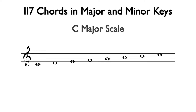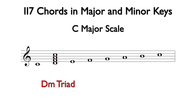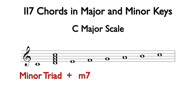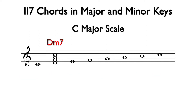Here is a C major scale. The two chord is based off of D. Using the notes from the scale to build the seventh chord, we can add F, A, and C above the D note. The bottom three notes spell a D minor triad, and the interval from D to C is a minor seventh. A minor triad plus a minor seventh interval above the root is a minor seventh chord. This is D minor seven, and we will use the lowercase two Roman numeral with a seven for the analysis. The two-seven chord comes from the second degree of any major scale.